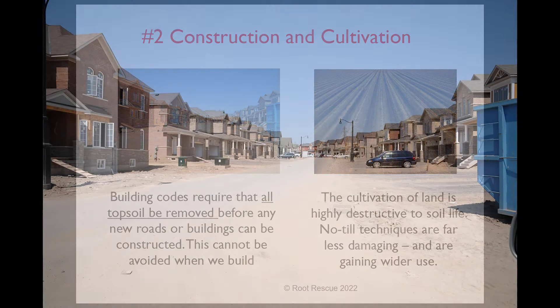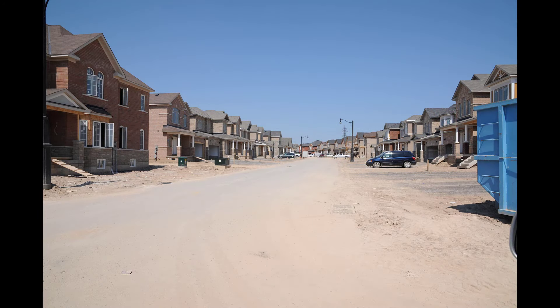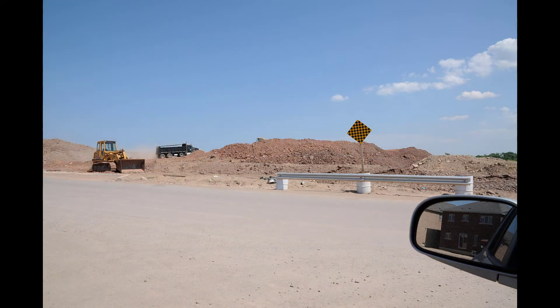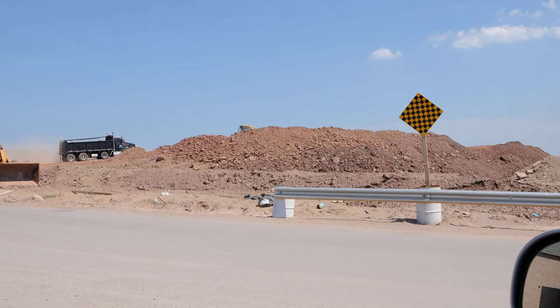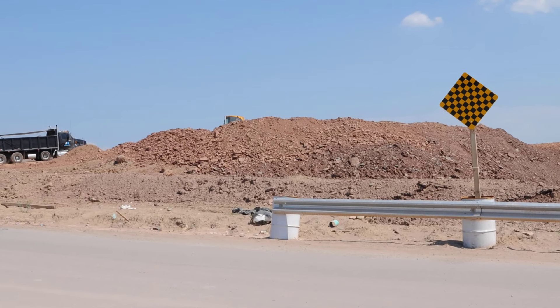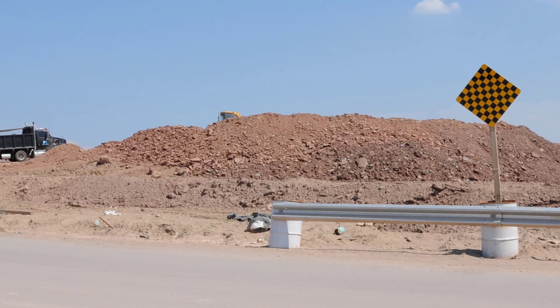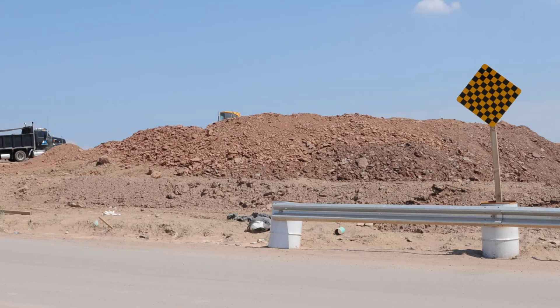The way we construct our urban communities is always going to damage soil life — this can't be avoided. It's literally chapter one of the building code. Roads and buildings cannot be built on soils containing any significant levels of organic matter. As such, the top layers of soil on any site must be stripped down to the subsoil before construction can even get underway. A typical suburban development begins with the arrival of heavy equipment that strips the topsoil from the land. This soil is then piled and compacted into berms and left to desiccate for several years while the construction and road building is completed.